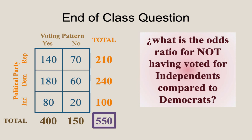Here is the next end-of-class question. What is the odds ratio for not having voted for Independents compared to Democrats?